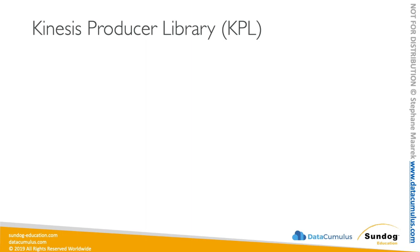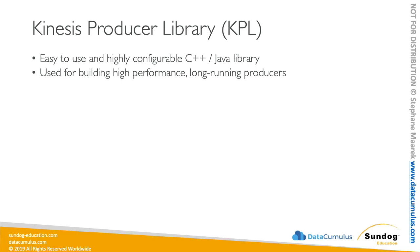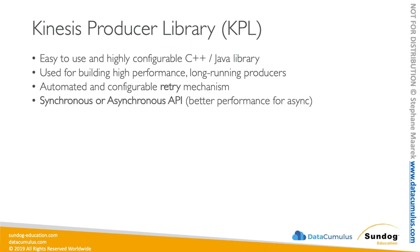The Kinesis Producer Library or KPL is an easy-to-use, highly configurable C++ or Java library — Java is more commonly seen. It is used to build high-performance, long-running producers and has automation for the retry mechanism, so the exception handling is built in. The KPL has two APIs: a synchronous API similar to the SDK, and an asynchronous API which provides better performance. Anytime the exam asks about sending data asynchronously to Kinesis data streams, the KPL is the answer.